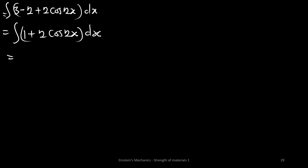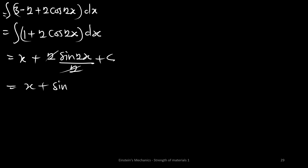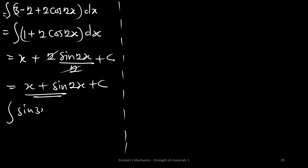This is the simplest form we can now integrate. Integrating 1 gives x, and integrating 2cos(2x) gives 2·sin(2x)/2, which simplifies to sin(2x). So the final answer is x plus sin(2x) plus C. Always make sure to get your trig identity right.